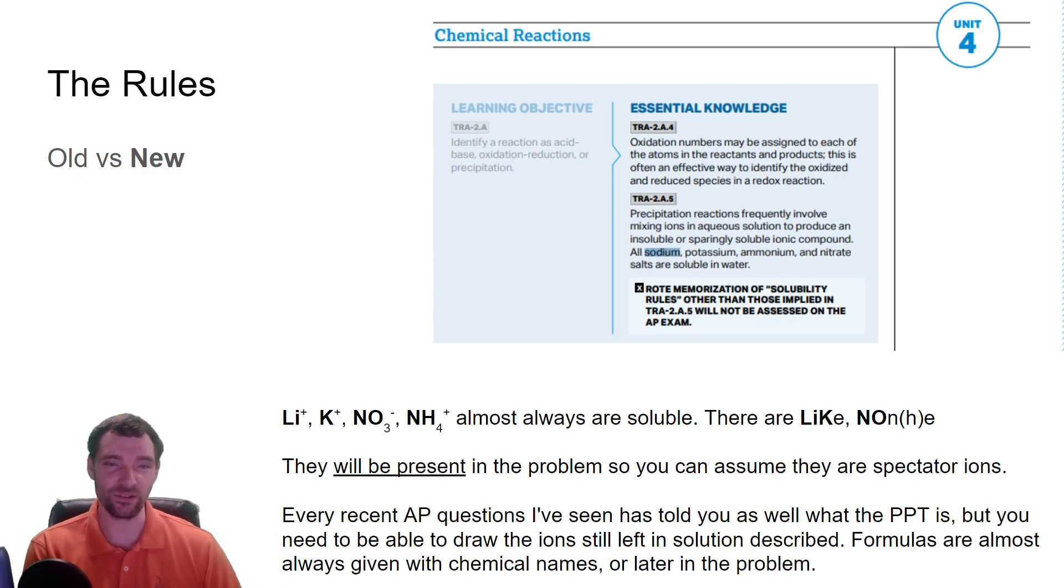You basically need to know how to recognize these and know that's not going to be the precipitant. But that isn't even the main focus on these problems. The main focus is more on drawing representations of precipitation and being able to represent ions and amount of moles. While this is still somewhat helpful, it isn't a big focus on the test.